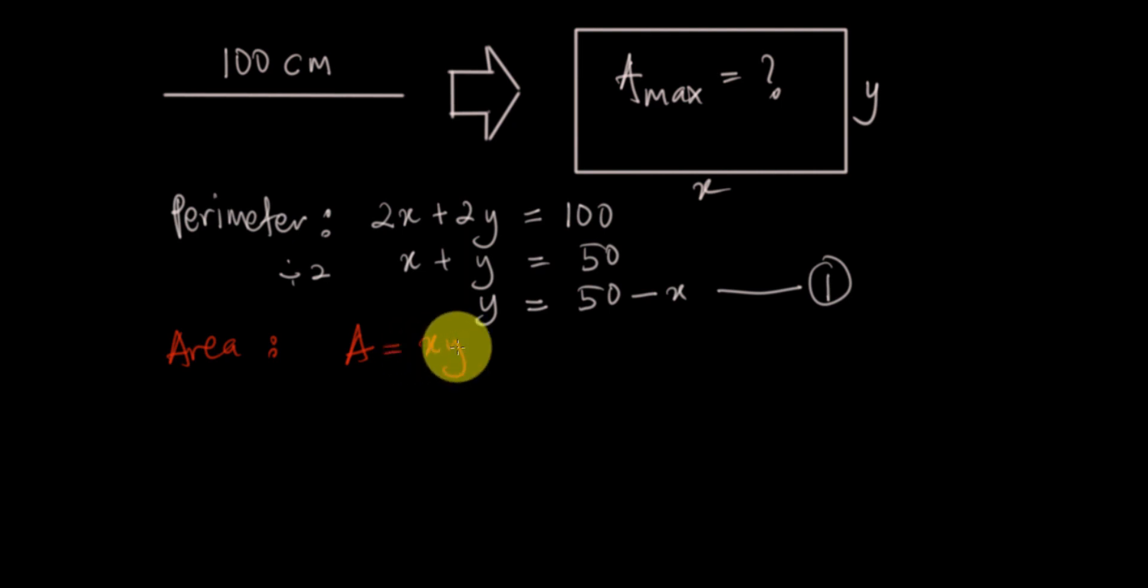But from equation one we know that y is equal to 50 minus x, so this one is equal to x times 50 minus x, and equal to 50x minus x squared.